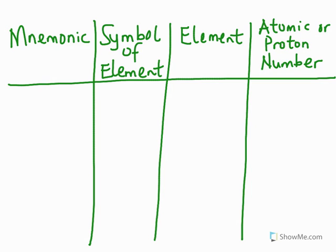So I am going to write the mnemonic. I shall write it in fives. Because of space I shall write five at a time. From the mnemonic I would write the symbol. Of course the symbol I can easily get from the mnemonic. Then I shall write the element and then I will write the proton number or atomic number, that is the number of protons in an atom of the element.